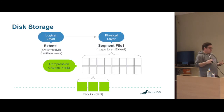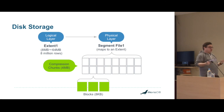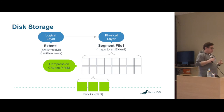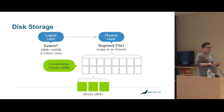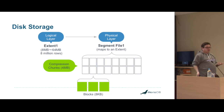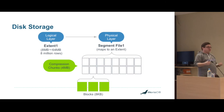For disk storage, we have the extent, which is 8 million rows — about 64 megabytes. The segment file contains two extents, which is just the way InfiniDB did it and we haven't changed that. It compresses in 4-megabyte chunks using Snappy compression, and inside that there are 8-kilobyte blocks. So it can compress down very, very well, especially if you've got quite a lot of sequential data.